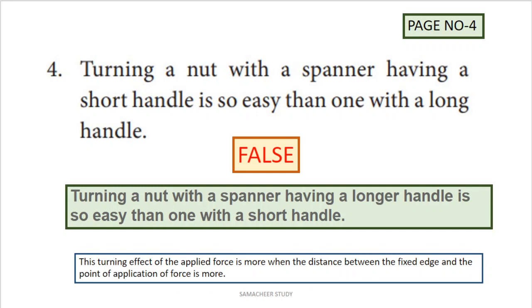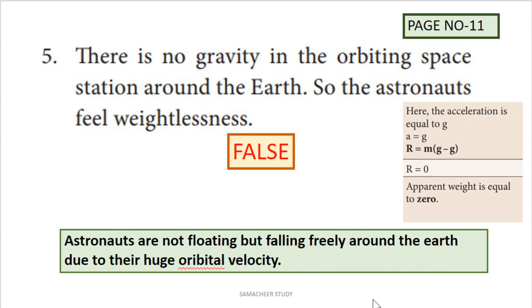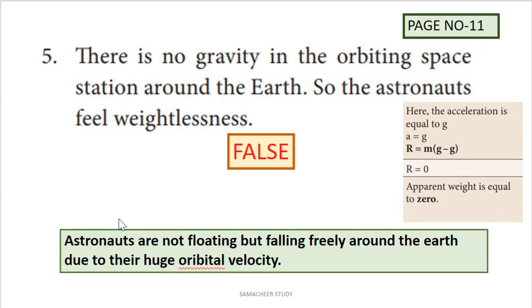Next: 'There is no gravity in the orbiting space station around the earth, so astronauts feel weightlessness.' This statement is false. The correct explanation is the free fall condition — apparent weight equals zero because acceleration equals acceleration due to gravity. Astronauts are not floating but falling freely around the earth due to their huge orbital velocity.